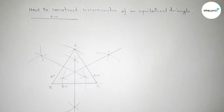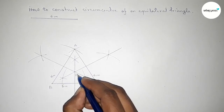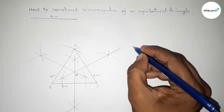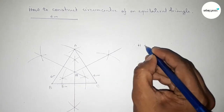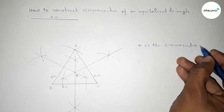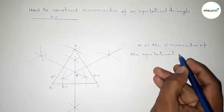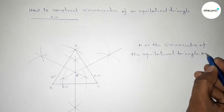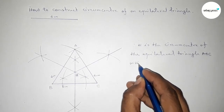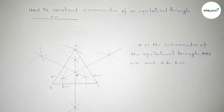The three bisectors intersect at a point — taking here point H. Therefore H is the circumcenter of equilateral triangle ABC with each side six centimeters. This is the process to construct the circumcenter of an equilateral triangle using a compass. That's all, thanks.